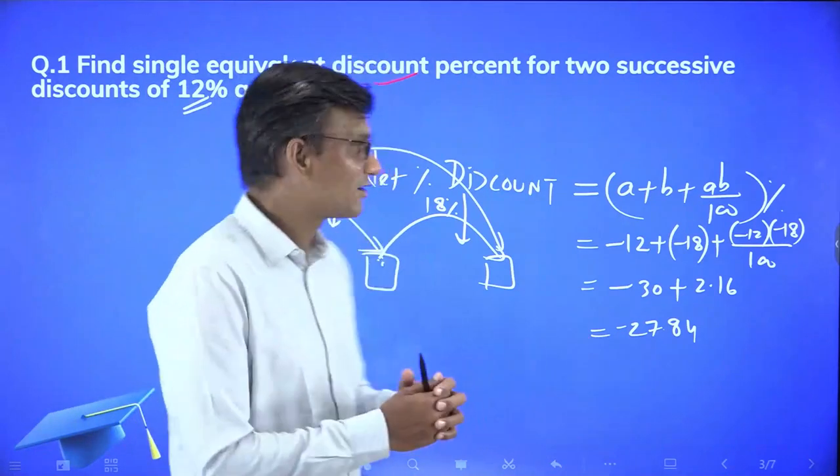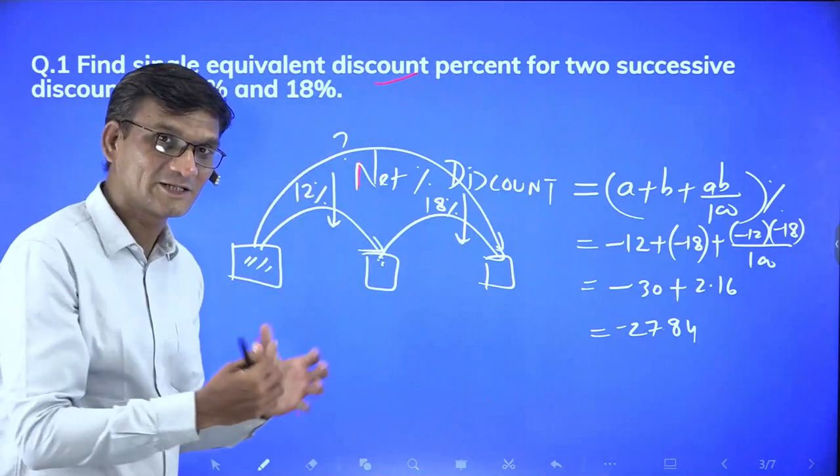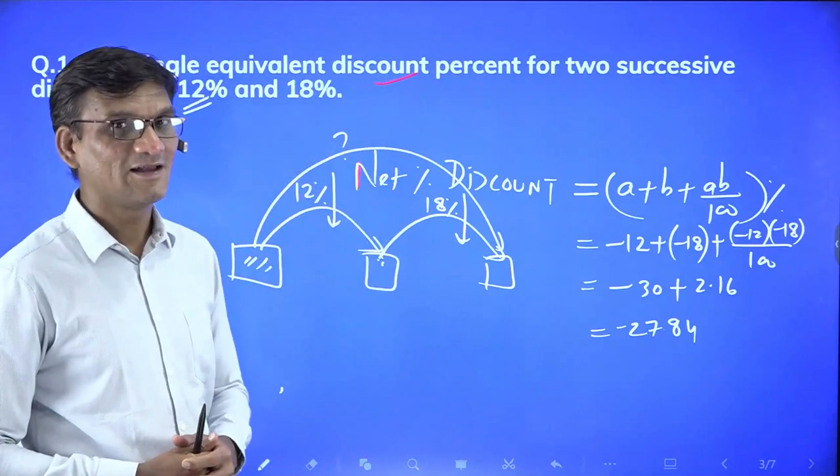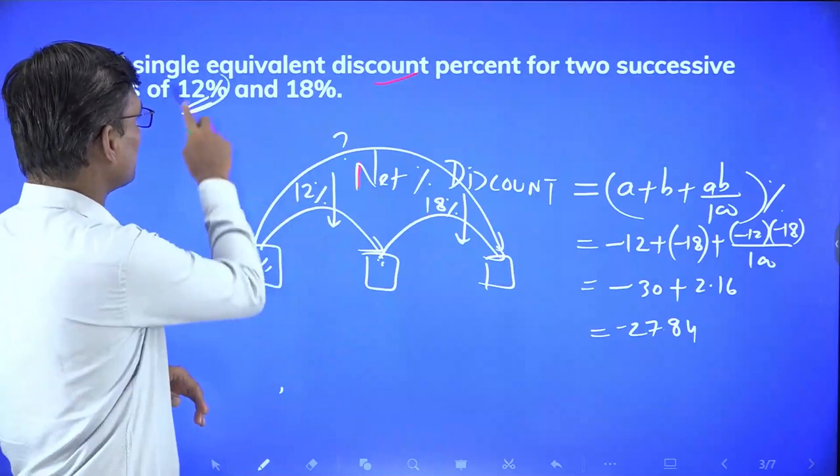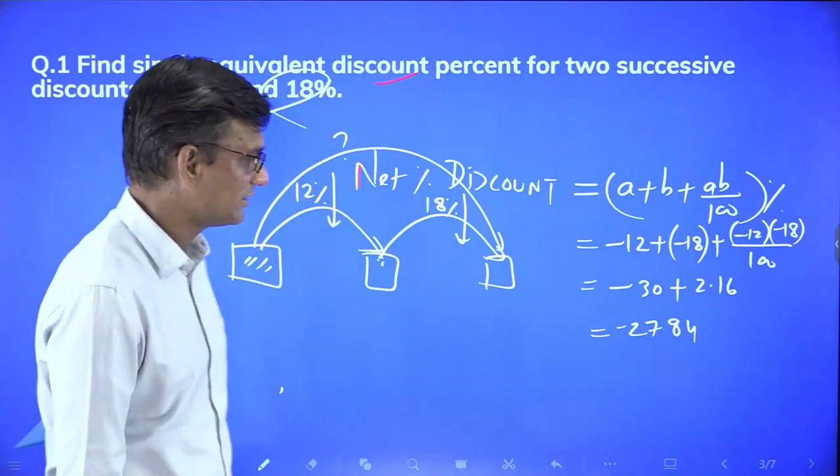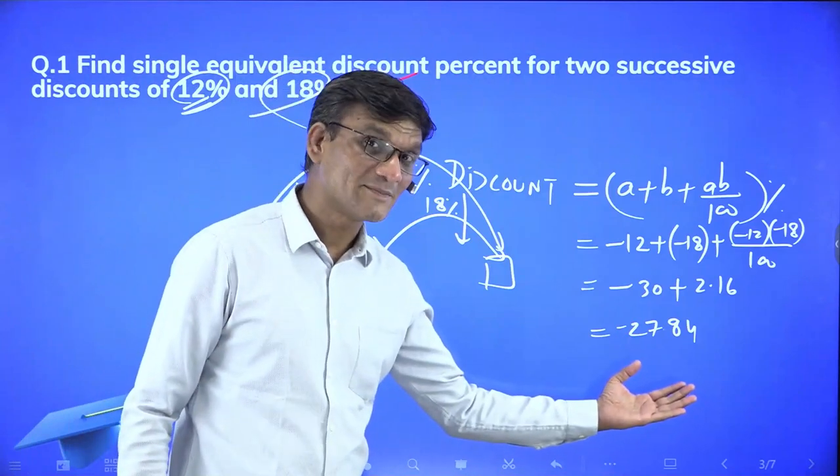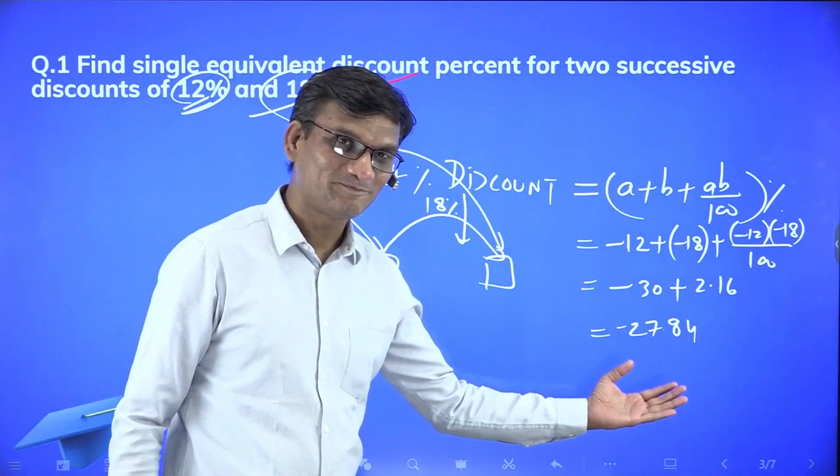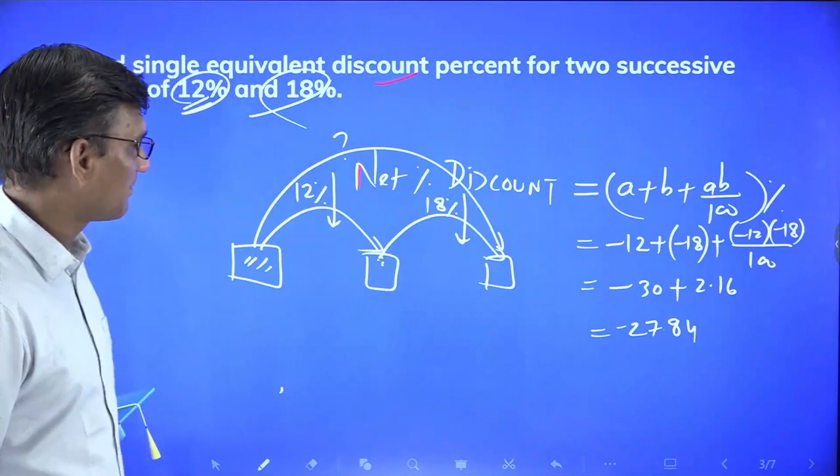Students simply add it and say 30 percent discount, but actual discount received is a little less than 30 percent. Using the formula: minus 12 minus 18 is minus 30, plus 12 times 18 which is 216 divided by 100 gives 2.16. So minus 30 plus 2.16 equals minus 27.84. Net discount is 27.84 percent.